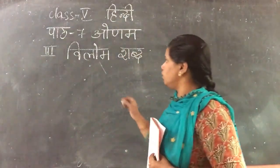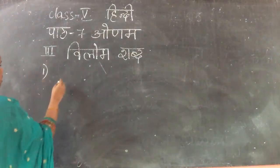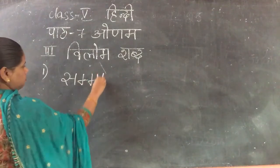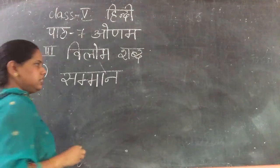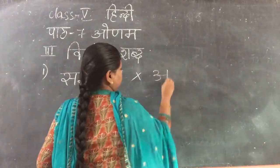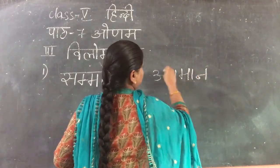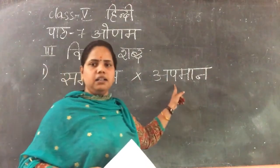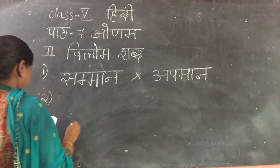This lesson you will know — Onam. So first one: Samman. Samman means Respect. Okay? The opposite of respect is Apman. Samman means Respect, Apman means Disrespect. Next one.